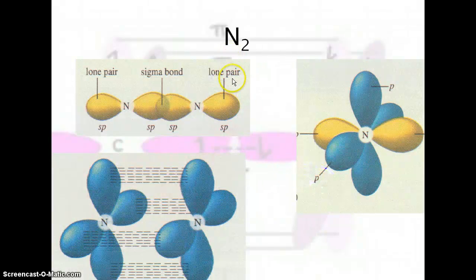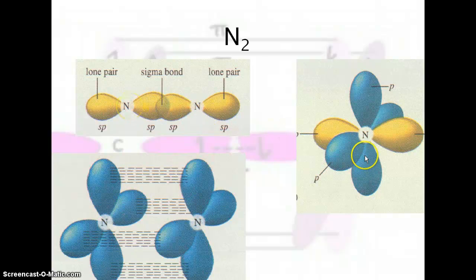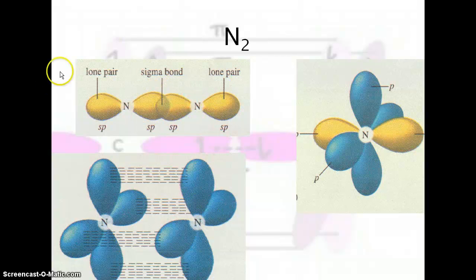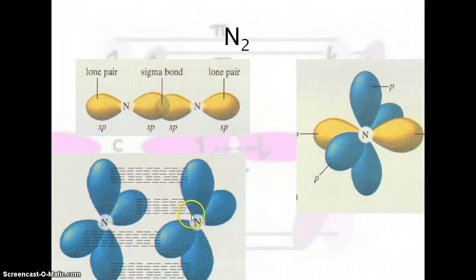Here's another example: N2, which is a triple bond. Nitrogen takes one s and one p and hybridizes them to an sp orbital. We get a sigma bond occurring between those. Looking at just the p orbitals, we see that there are two pi bonds occurring in the triple bond, because we have two different sets of p orbitals hybridizing.